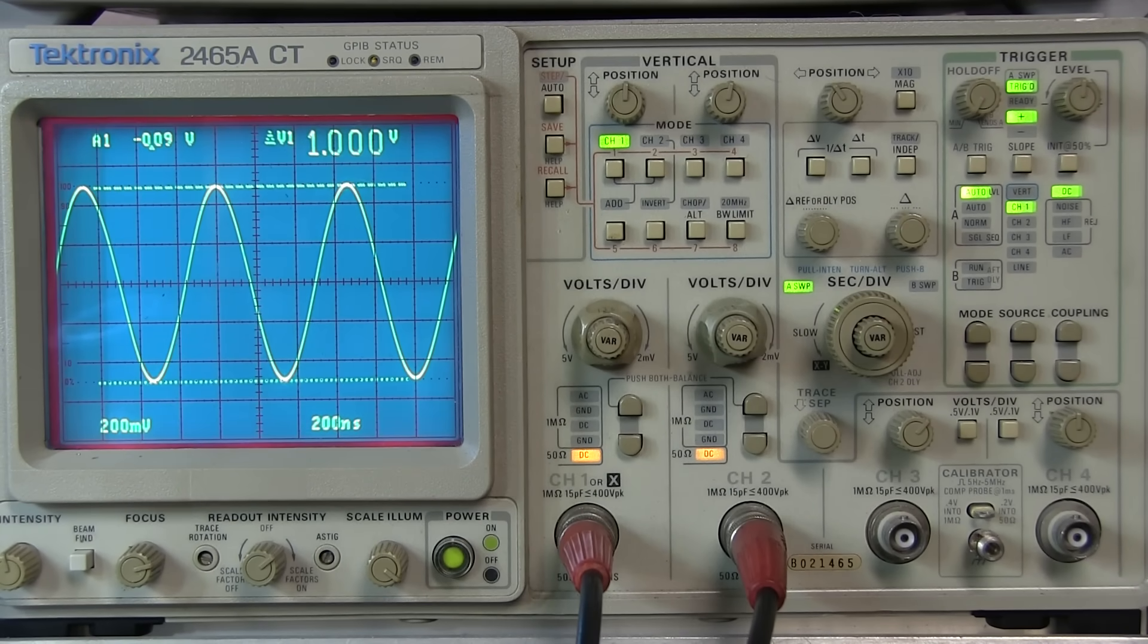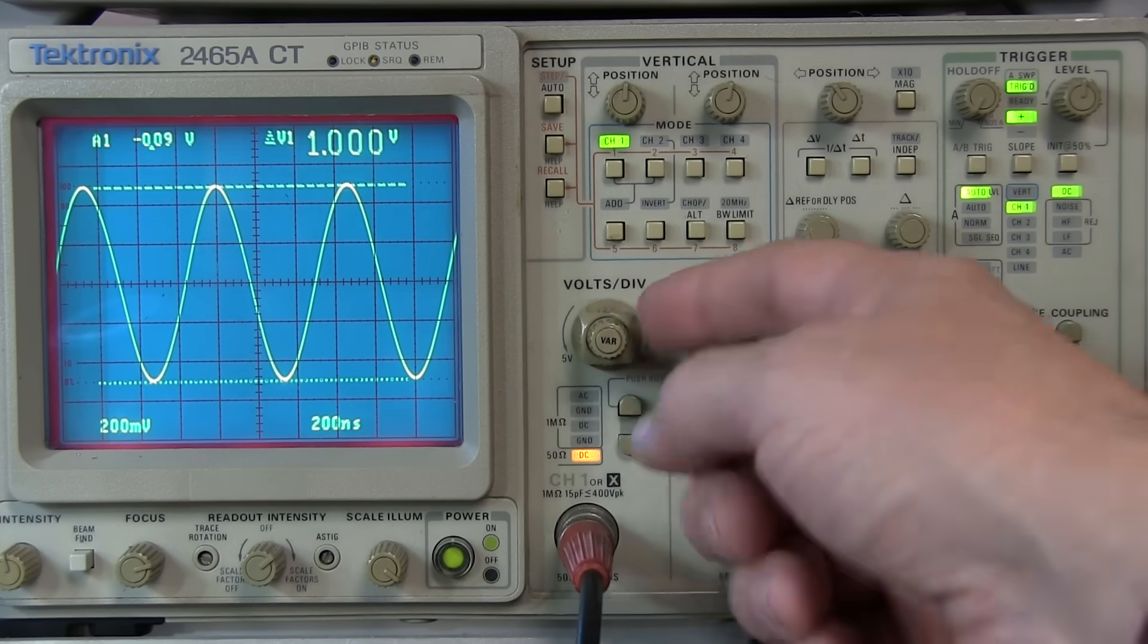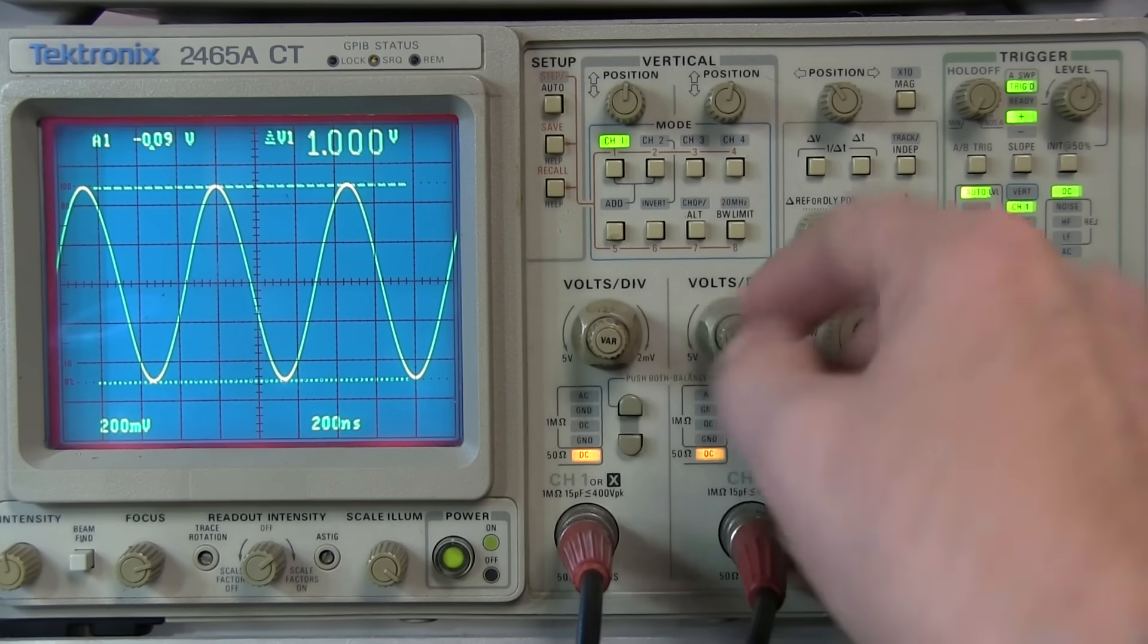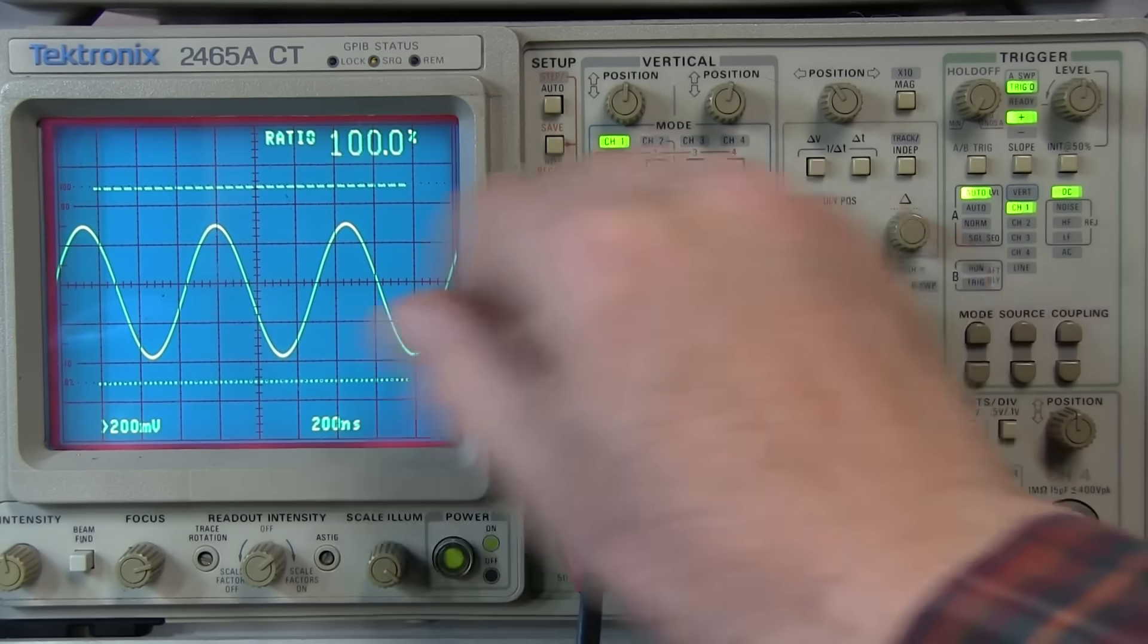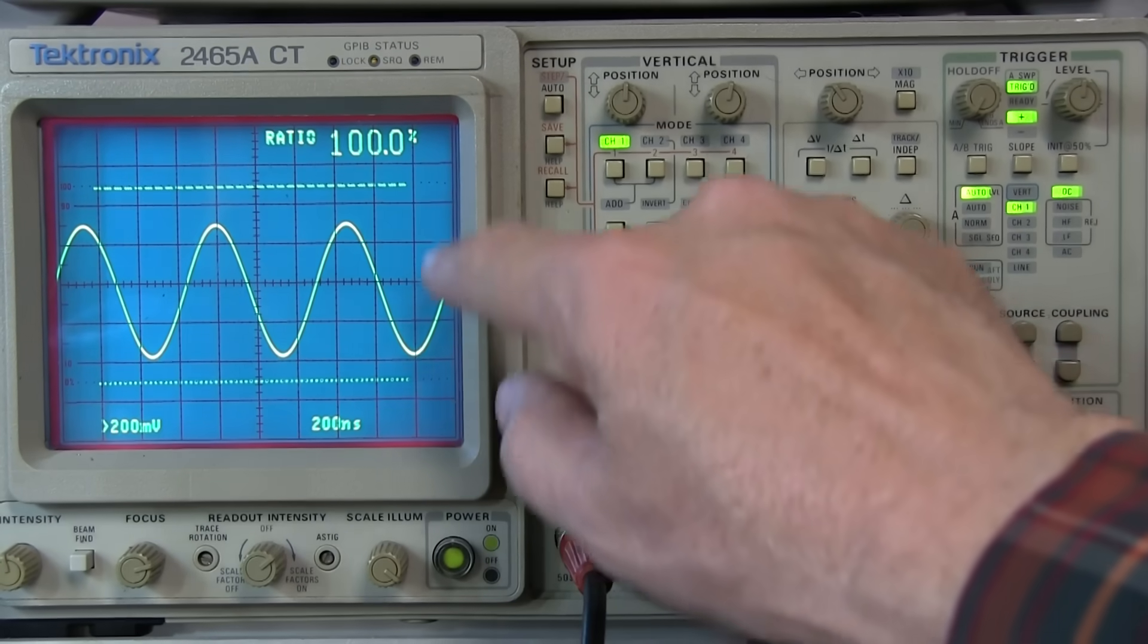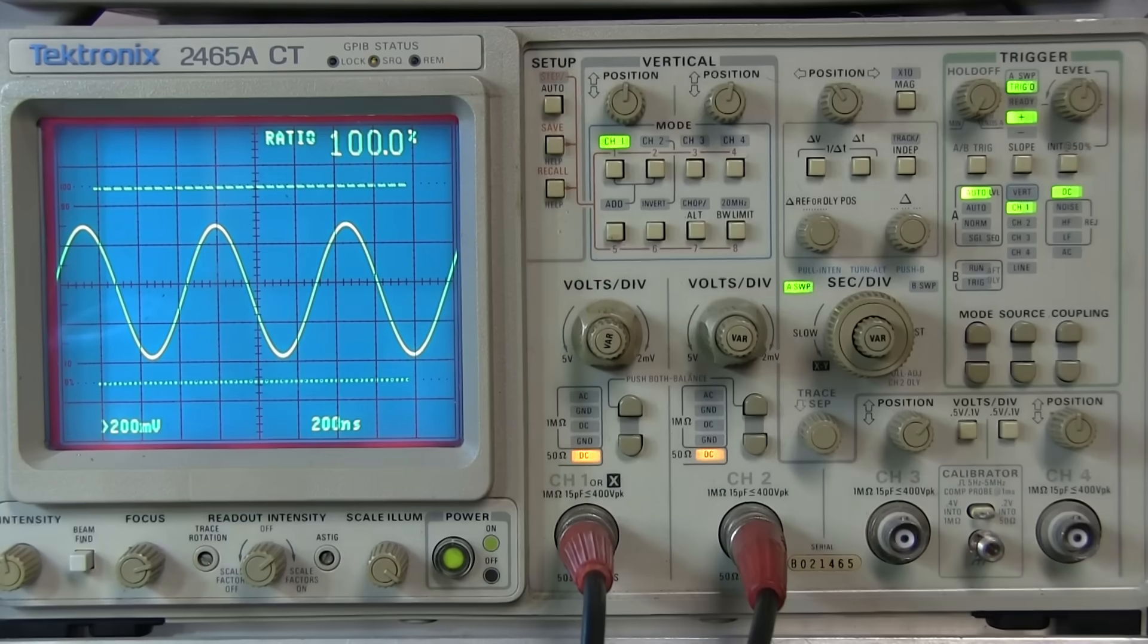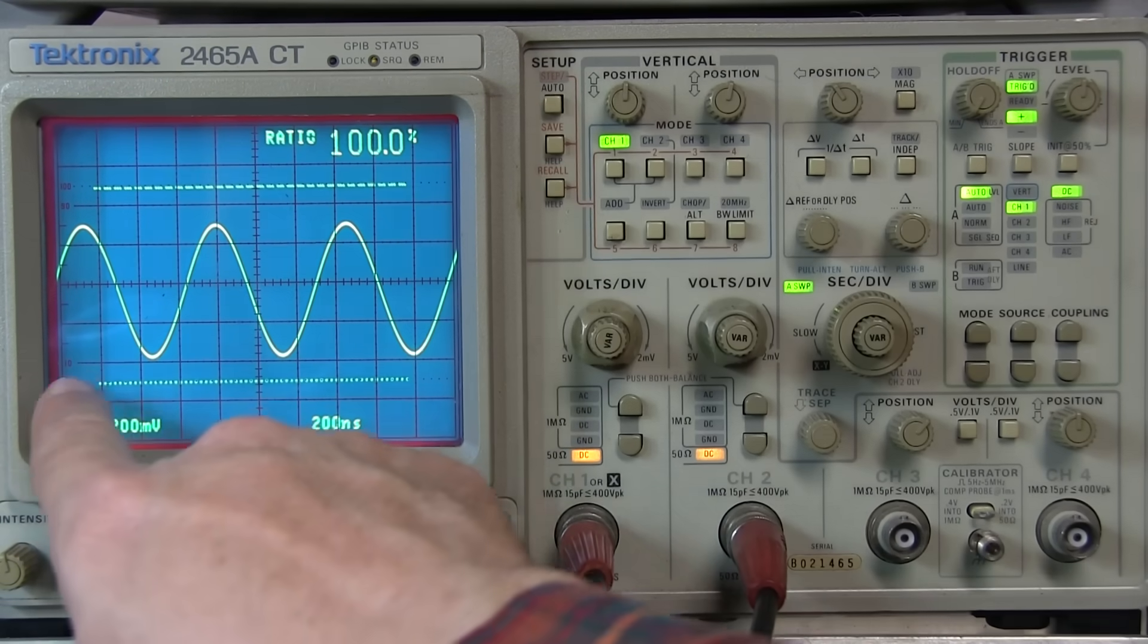So let's start with the vertical function. So if I go and change my vertical setting to be in the uncalibrated variable mode by rotating this knob counterclockwise, we can see I'm not in a calibrated scale now. And you also notice that the cursors change to a ratio number. Now that 100% value corresponds to the markings on the display that show 0% and 100%.